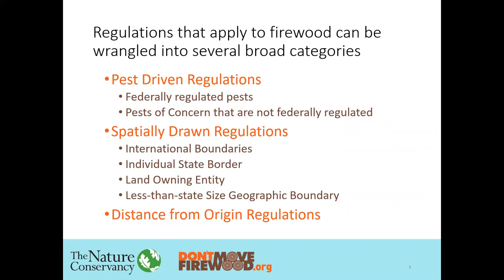In order to divide up the universe in a way that makes sense for regulations that apply to firewood, instead of reviewing every single regulation in every province, country, and state in North America — 50 states, at least 12 Canadian provinces, and two countries — I decided to break them into conceptual categories. Those are pest-driven regulations, which are specific regulations on either federally regulated pests or a forest pest of concern that is not federally regulated; spatially drawn regulations, which pertain to a boundary or border; and distance-from-origin regulations.